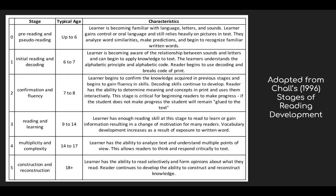Another framework was created by Chall, who developed six specific stages of reading development. Stage zero, the pre-reading or pseudo-reading stage, is when the learner is becoming familiar with language, letters, and sounds. The learner gains control of oral language and still relies heavily on pictures and text. They analyze word similarities, make predictions, and begin to recognize familiar written words. Stage one, the initial reading and decoding stage, is when the learner is becoming aware of the relationships between sounds and letters and can begin to apply knowledge to text. The learner understands the alphabetic principle and alphabetic code.